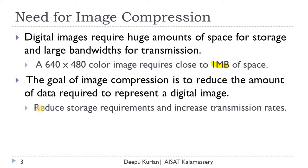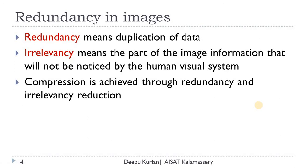If you use an image compression algorithm, it will reduce the storage requirements and increase transmission rates. That is the need for image compression. Image compression is mainly achieved by using two properties of natural images: redundancy and irrelevancy. Redundancy means duplication — if you have redundant or duplicate data bits, it is called redundancy.